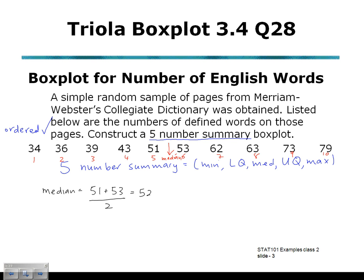The lower quartile is the median of the first half of the data. Taking the first half of the data, 34 up to 51, our lower quartile is the median of that half. That would be our value at position 3, a value of 39, giving a lower quartile of 39. Similarly, the upper quartile looks at the second half of the data, 53 up to 79, giving an upper quartile of 63.